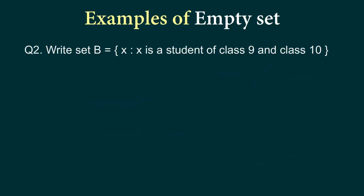Let's take a look at a second example. So what about we have a set B where it contains element x such that x is a student of class 9 and class 10. So as you can imagine, now think of any student.